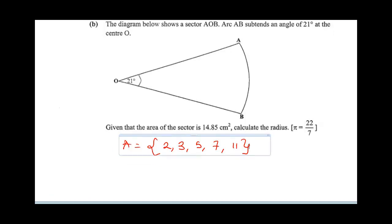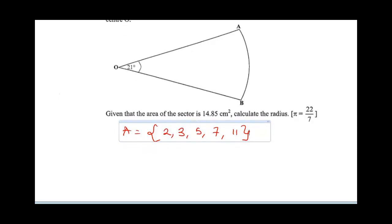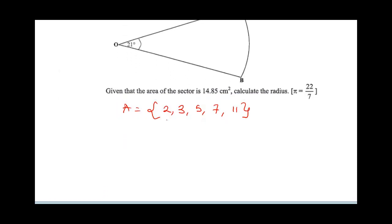Part B of the question says, the diagram below shows a sector AOB. Arc AB subtends an angle of 21 degrees at the center. Given that the area of the sector is 14.85, calculate the radius. We've been given the area of the sector, so one thing you need to know is the formula of area of sector.